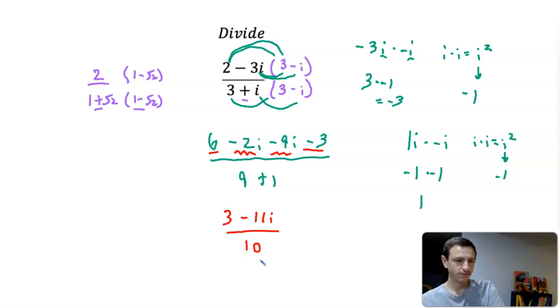Most textbooks will ask then to write it into standard form, but that's not testing your knowledge of dividing—it's just this extra step in writing into standard form. So standard form would be 3 over 10 minus 11i over 10. That would be our solution to dividing these statements with i in them.